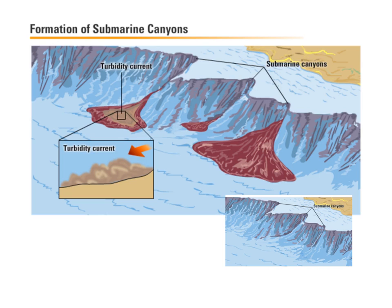One of the key features of the continental margin are submarine canyons — sub meaning under, marine meaning water, so these are underwater canyons. They're created similarly to desert canyons by turbidity currents. A turbidity current is nutrient-rich water that is denser than surrounding salt water, causing it to sink and flow much like a river, cutting into the continental shelf and forming these submarine canyons.